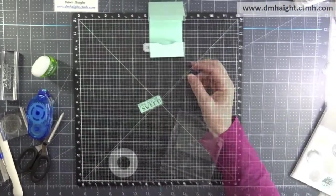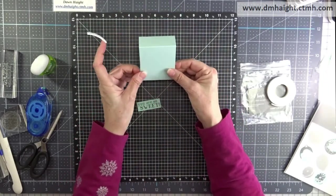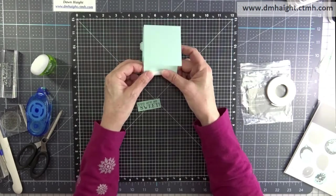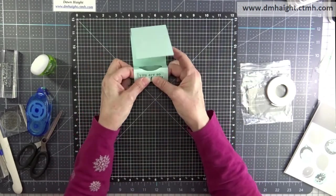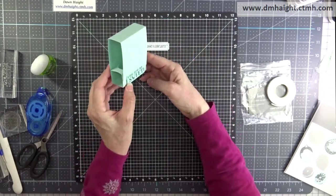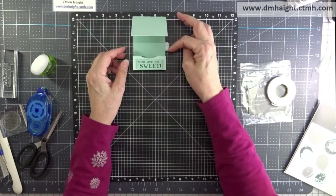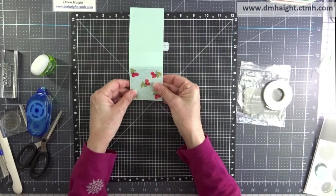I'm going to take some foam tape, a line of foam tape, and I'm going to place it right at the base of where that cut edge is. Then I'll put my sentiment on there. So it kind of creates a little place for that flap to tuck in. That's what keeps it closed. So it's kind of like a matchbox.